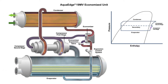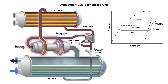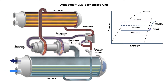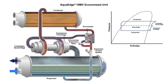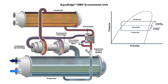The refrigerant vapor is now drawn from the evaporator into the 19MV's back-to-back two-stage compressor. Flow is controlled by the position of the first stage inlet guide vane, and the first stage impeller compresses the refrigerant vapor to an intermediate temperature and pressure.